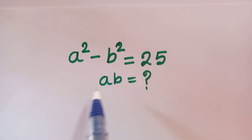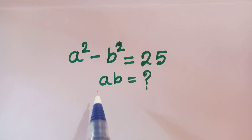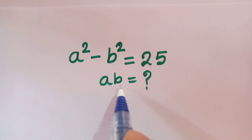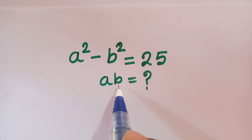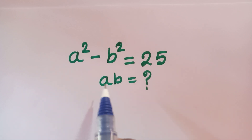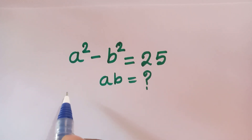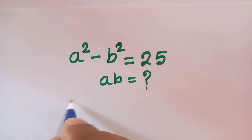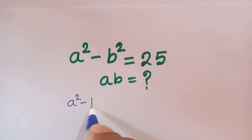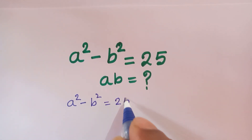Hi everyone, welcome! In this video I am going to show how to find the value of AB. To find AB, we need the values of A and B. Our question is: a squared minus b squared is equal to 25.